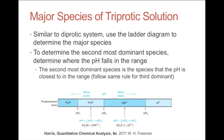The same approach applies to triprotic solutions — the ladder diagram is just a little bit bigger. You take your pH, determine where it lies in the ladder diagram, and that's your major species. To determine your second most dominant species, you determine where the pH falls in that range more specifically. For example, if your pH lies closer to pKa2, then H₂A⁻ is your second most dominant species.